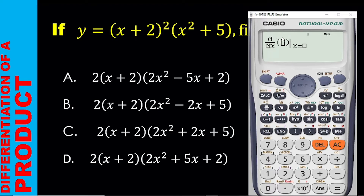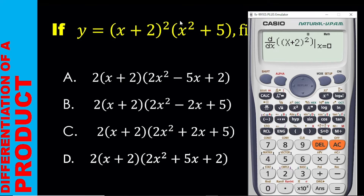This box means you have to enter the expression you want to differentiate. In this case, we are going to enter this expression. For the Y equals, we ignore that and only enter the expression. So I open my bracket — bracket opens. I now have X: alpha X plus 2. There is another bracket here, so I close the first bracket. The bracket is closed and we have a square, so I need to square that. Then there is another bracket: alpha X squared and then plus 5. Don't forget to close that bracket.